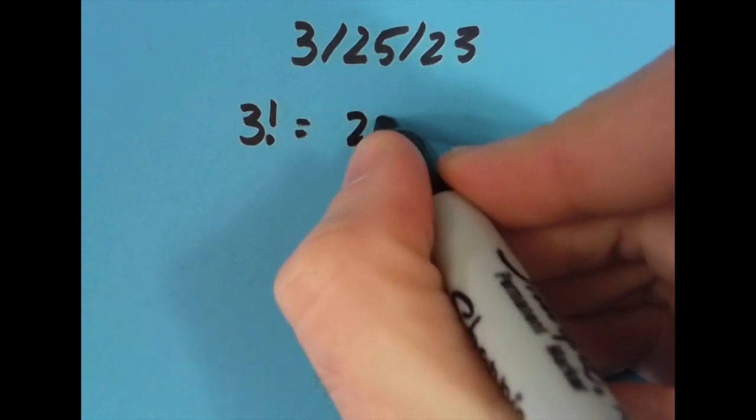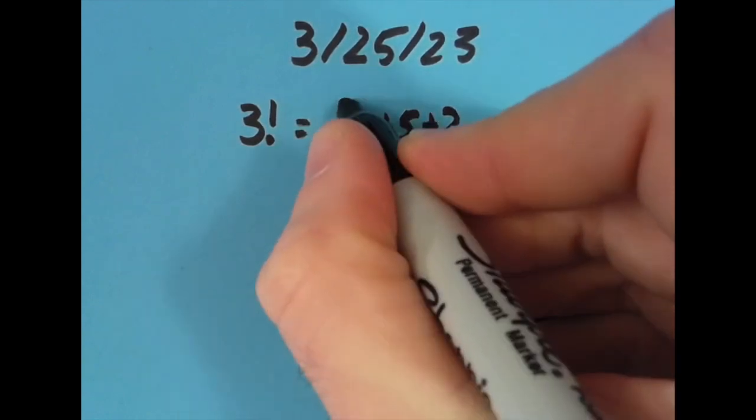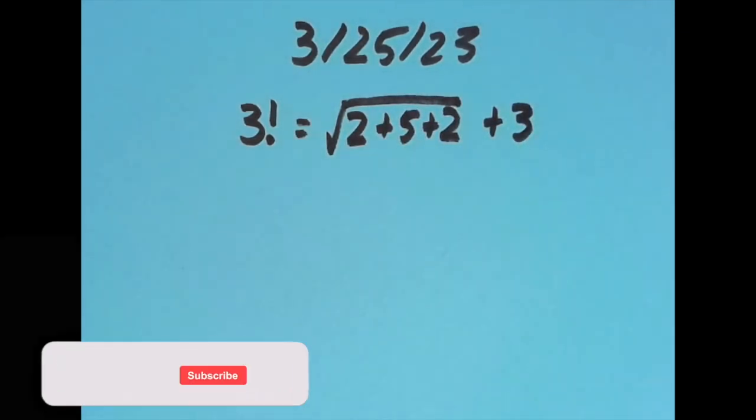And it's going to be equal to 2 plus 5 is 7, plus 2 is 9. The square root of 9 is 3, and then if I do that 3 plus 3 more, that gives us 6.